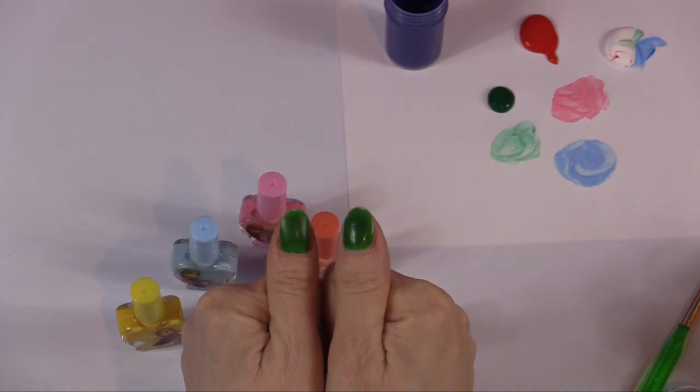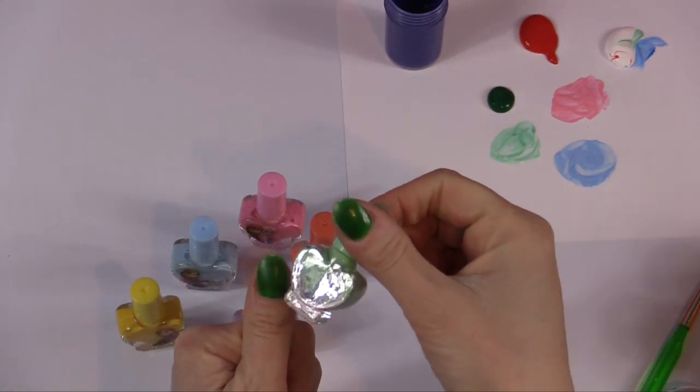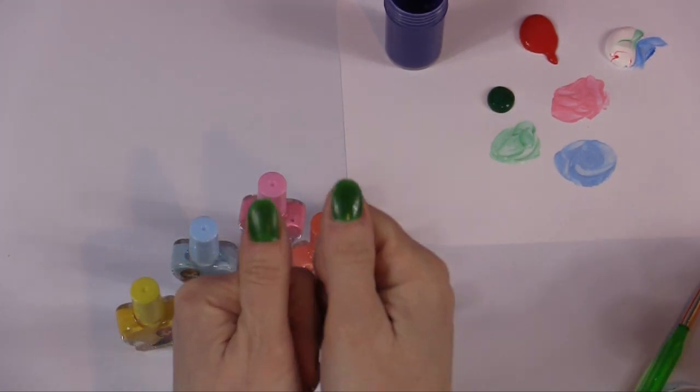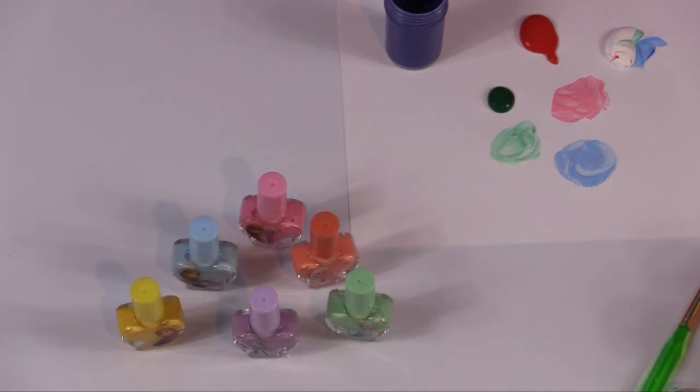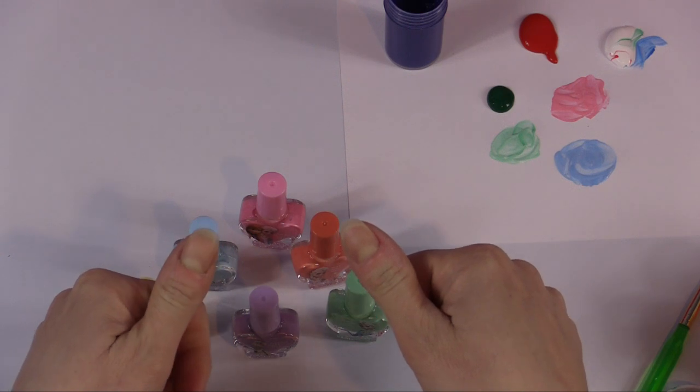But first, we have to get rid of the dark green because we want to put the light green on there for the pastel. So let's go get rid of the dark green off the nails. Here we go. That's better.